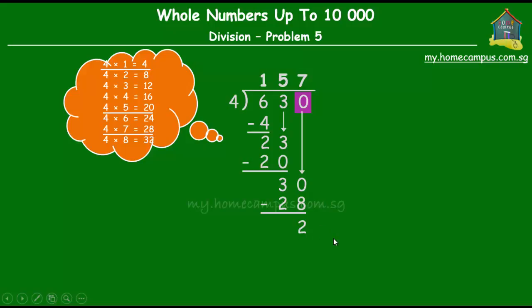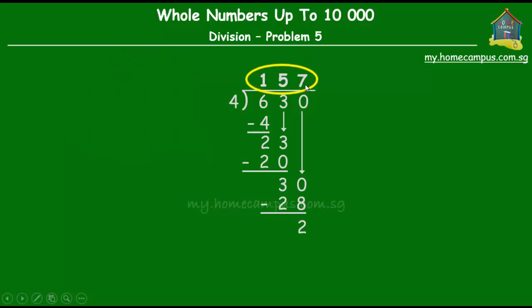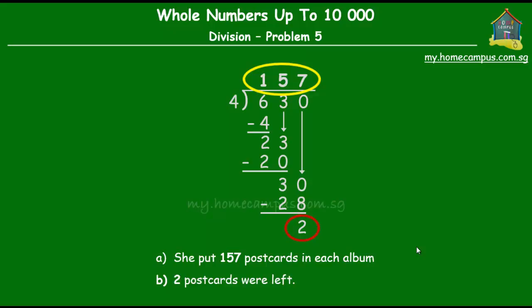Finally you have 157 which is your quotient and 2 which is your remainder. So 630 postcards when they are divided equally among 4 albums, each album will have 157 postcards and there will be 2 postcards that will be left.